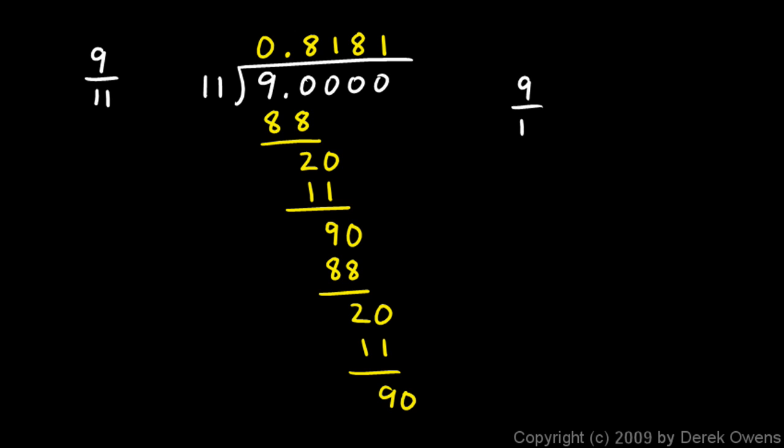I could say 9/11 is equal to 0.8181818... indicating that the pattern that I have established there repeats forever. Or I could write it using the bar notation. 9/11 is equal to 0.81 repeating. And I put a bar over the 8 and the 1, indicating that both of those digits repeat.